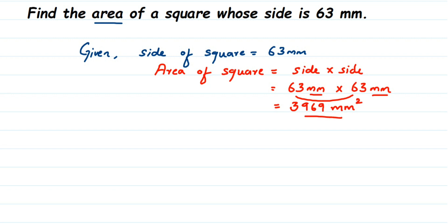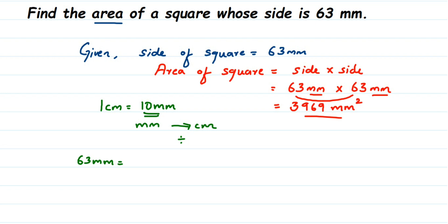That is the answer. If you want to convert to centimeters, that answer will also be correct. We know that 1 centimeter equals 10 millimeters. Since millimeter is a smaller unit and centimeter is a higher unit, when converting from smaller to larger you always divide. So divide 63 millimeters by 10.